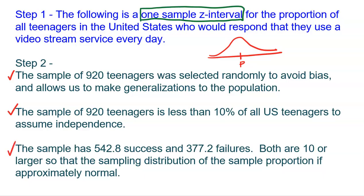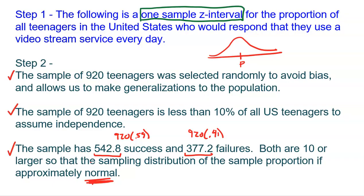Finally, in order to use the normal model, we need 10 or more successes and 10 or more failures. In our sample of 920 people, 59% responded they use a video streaming service every day — that gives 542.8, which is more than 10. The 41% who do not gives 377.2 failures, also more than 10. Since both values are 10 or larger, the sampling distribution will be approximately normal. These are the same conditions checked anytime you utilize a sampling distribution in an inference procedure.